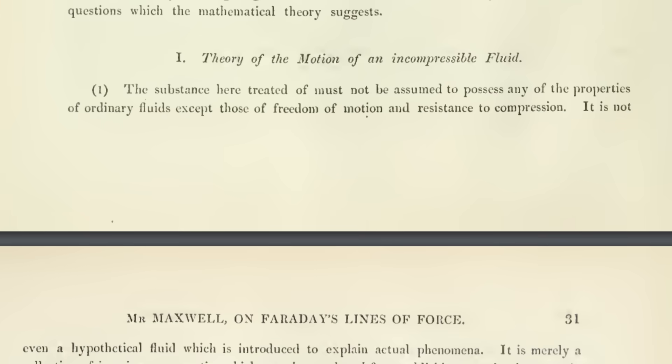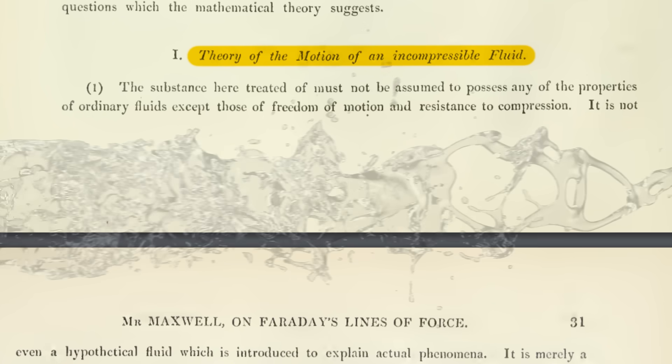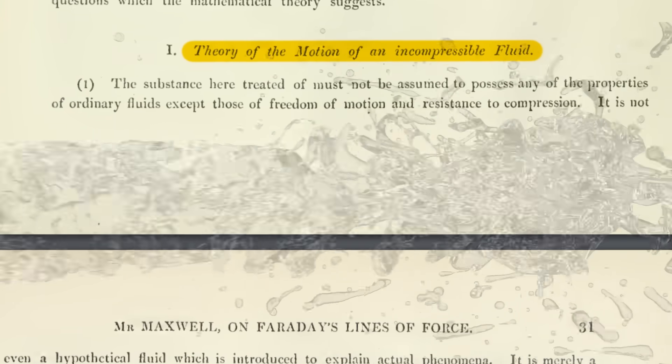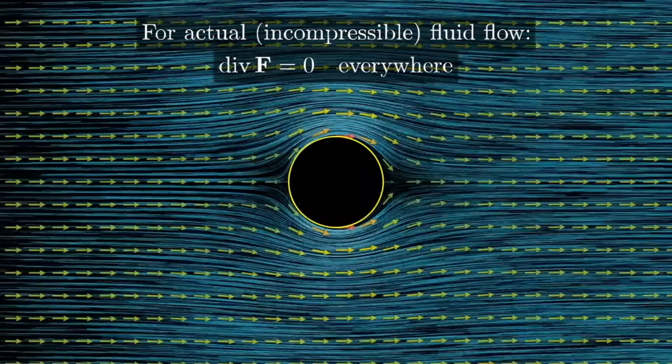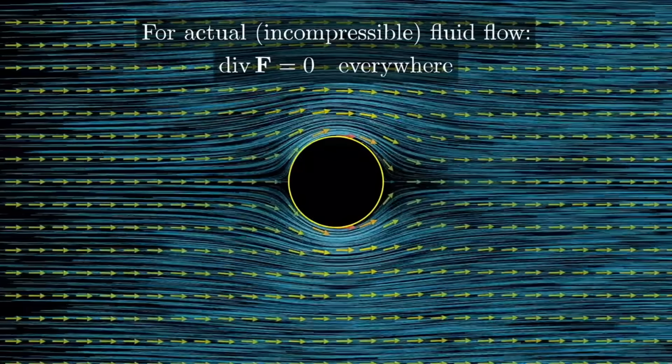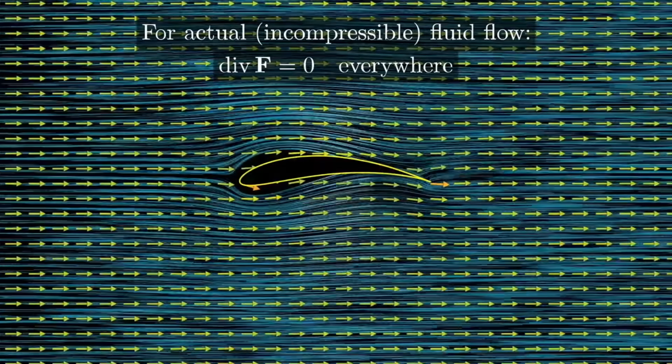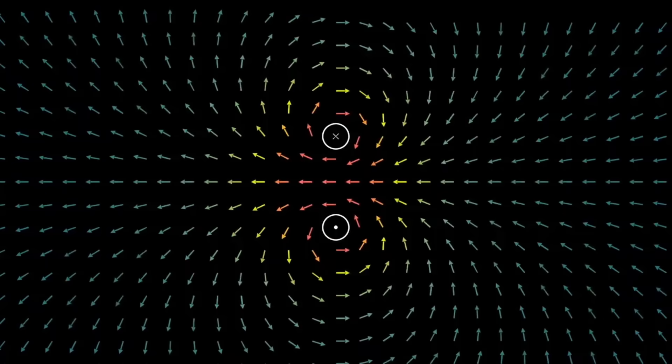The first paper Maxwell wrote on electromagnetism was titled On Faraday's Lines of Force, published in 1855. Merely as an analogy, Maxwell proposed that electric and magnetic fields could be thought of as incompressible fluids. Incompressible means that the fluid cannot be compressed into a smaller volume. A key property of an incompressible fluid is that its divergence is zero. This allowed Maxwell to immediately write down the mathematical expression for the behavior of magnetic fields. The divergence of the magnetic field is zero. This is the first Maxwell equation.